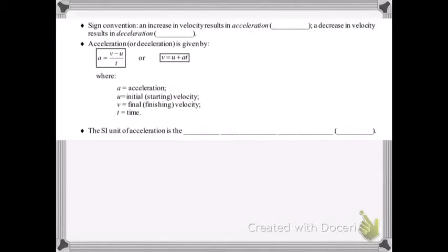So the sign convention, in other words, how do we interpret plus and minus signs? An increase in velocity results in acceleration and that is a positive sign. A decrease in velocity results in deceleration, which is a negative sign.